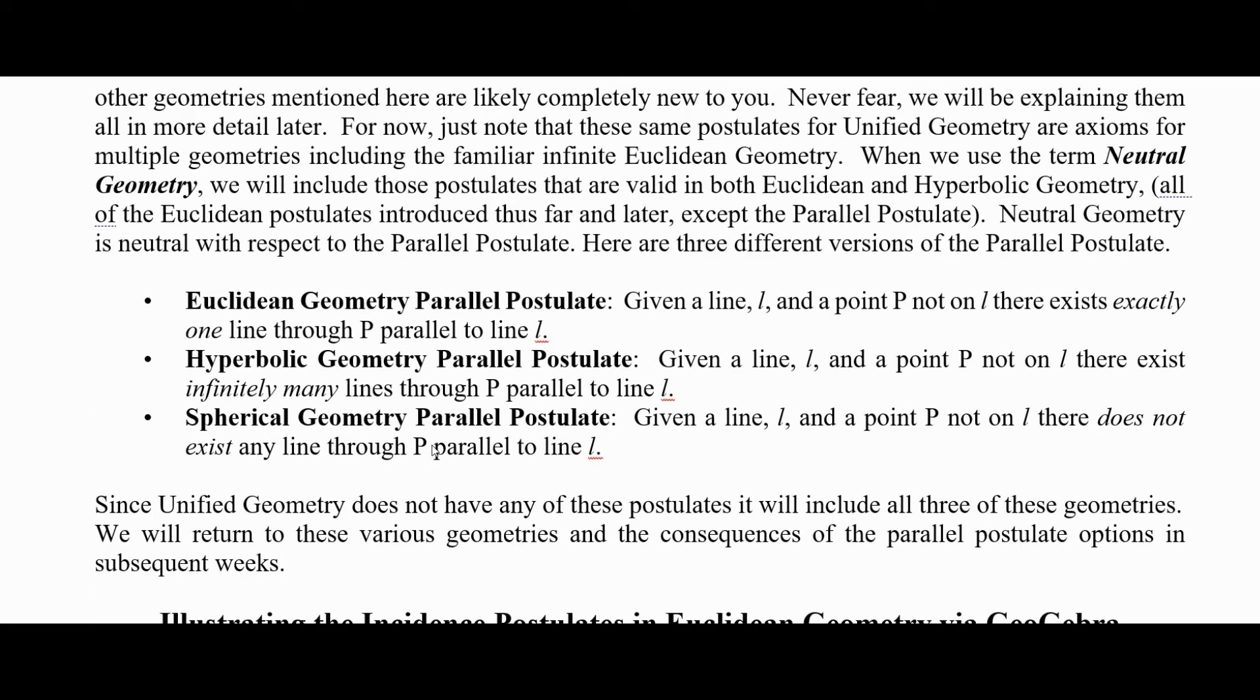The Euclidean geometry parallel postulate says given a line L and a point P not on L, there exists exactly one line through P parallel to line L. The hyperbolic geometry parallel postulate says given a line L and a point not on L, there exists infinitely many lines parallel to line L.